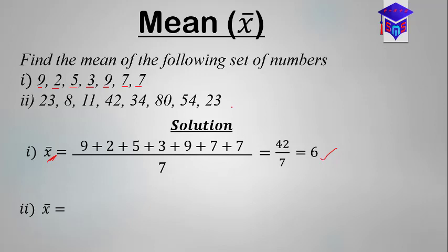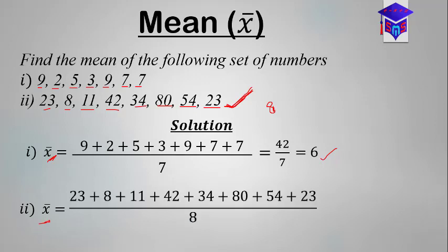I'll leave you to try the second set. Pause the video and try it. The X̄ is going to be the sum of all those values — 23, 8, 11, 42, 34, 80, 54, 23 — divided by the number of values. We have 1, 2, 3, 4, 5, 6, 7, 8 — eight numbers. So the mean equals the sum of all values over 8. Simplifying gives 275 over 8, which equals 34.375.